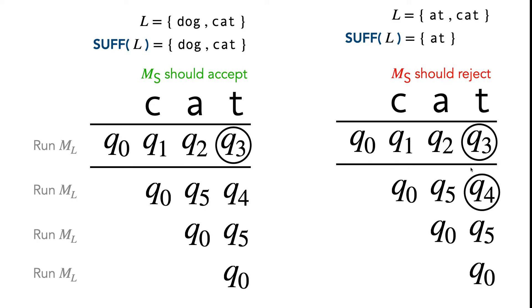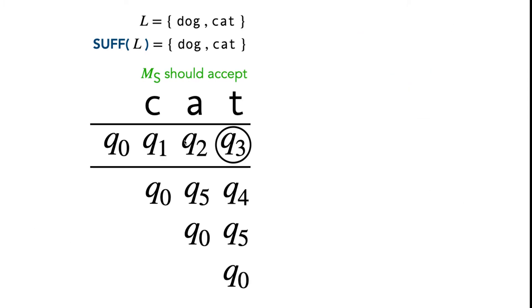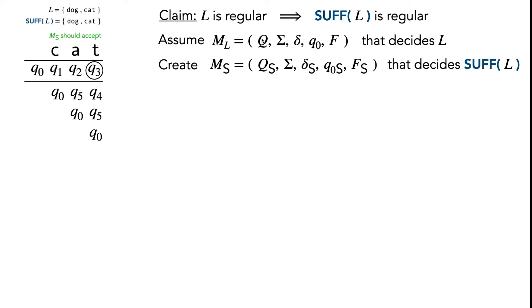Importantly, because one of the proper suffix threads was in an accepting state at the end, that's why M_S should reject. Let's take this example and keep it to the side for reference so we can get back to our proof.